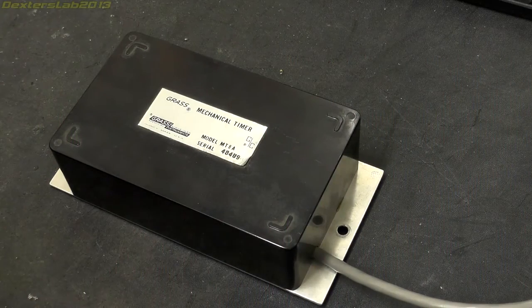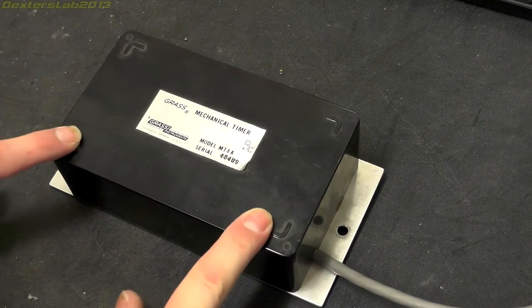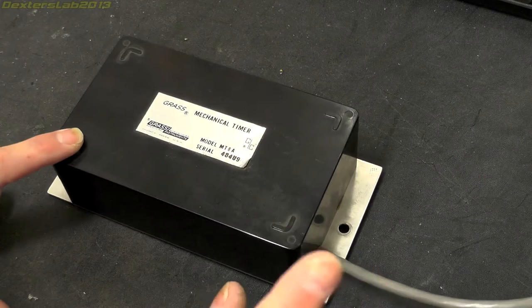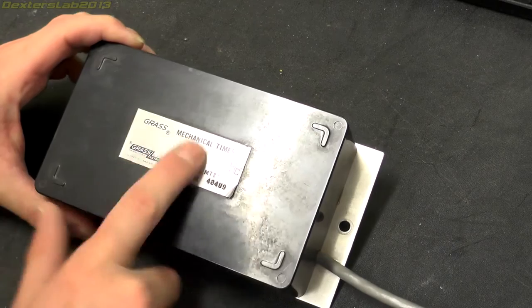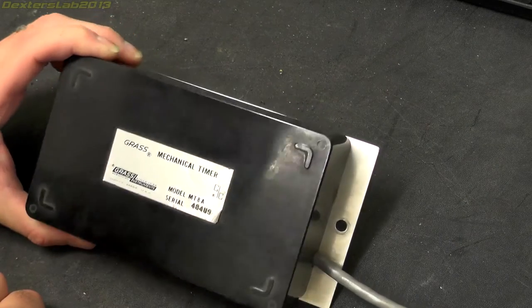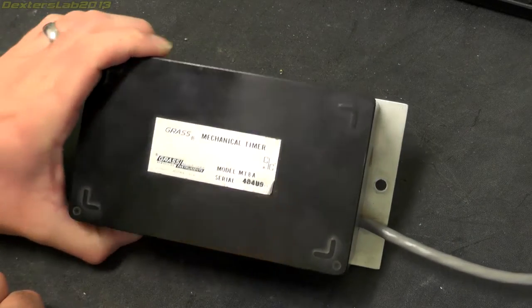Hey everybody, so it's teardown time again. We got another part from the Grass instrument polygraphs. This has got a label on top that says Grass mechanical timer, so I'm not expecting too much in this to be honest.